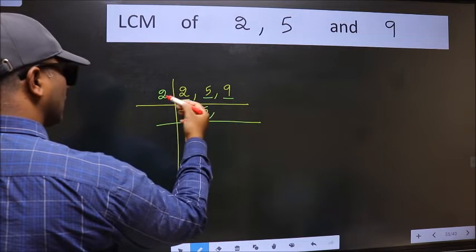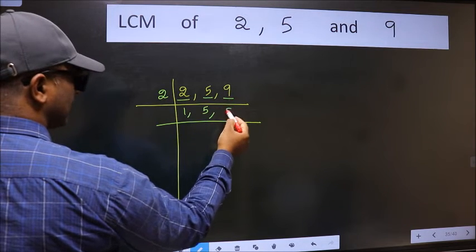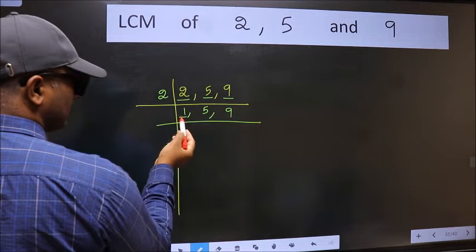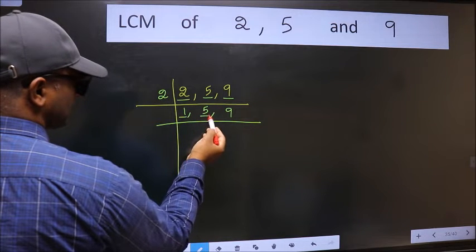The other number 9 is not divisible by 2, so you write it down as it is. Now we got 1 here. So focus on the next number 5.